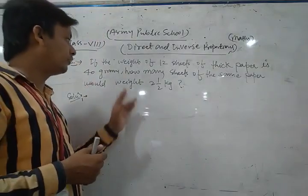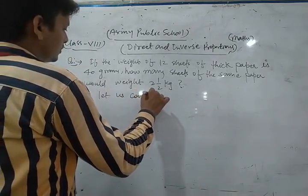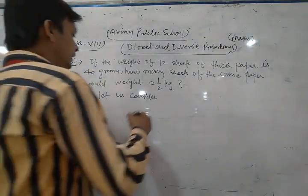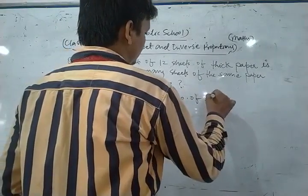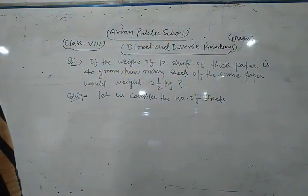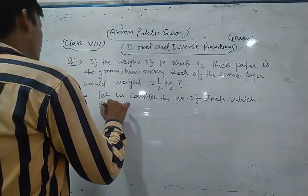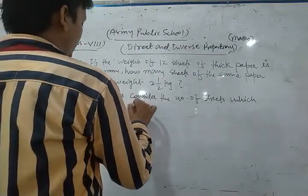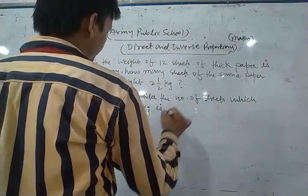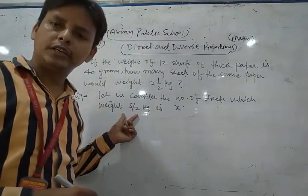Let the number of sheets which weigh 2.5 kg be x. We form a table with number of sheets and weight in grams. We convert 2.5 kg to grams: 2.5 kg equals 2500 grams.